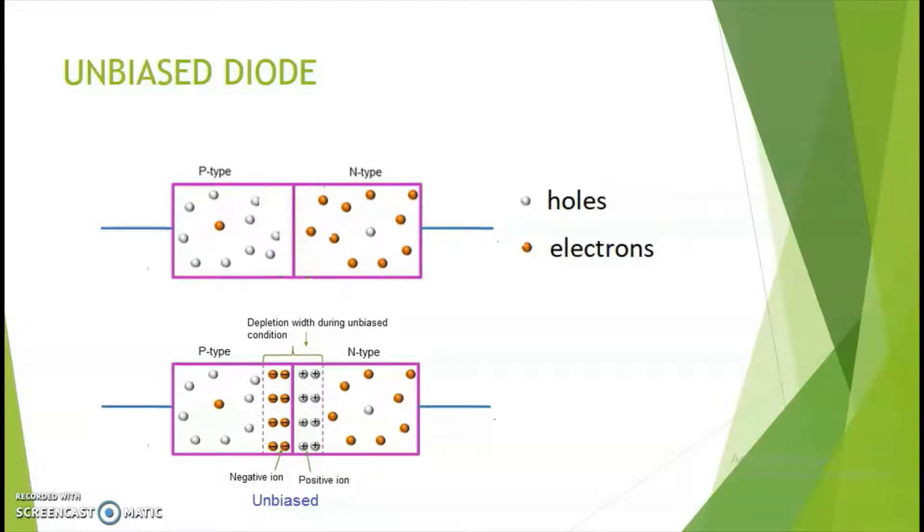An atom is actually neutral and when it loses a hole, it becomes negatively charged. Similarly, an atom losing an electron will become positively charged. The atoms are immobile, i.e. they are fixed, and they form an array near the junction. This is called as the depletion region. It prevents further movement of charge carriers across the junction.